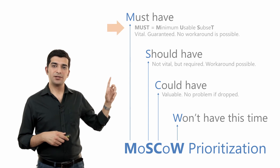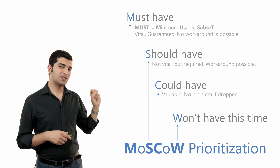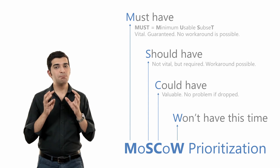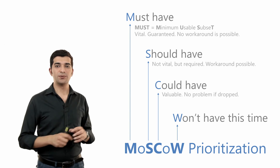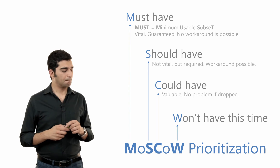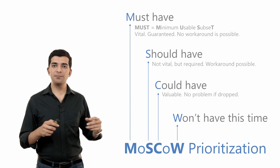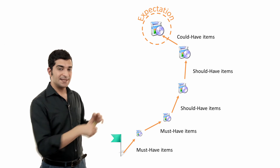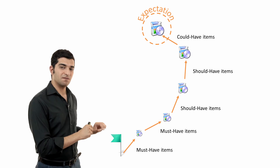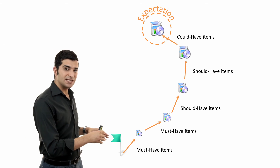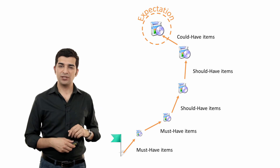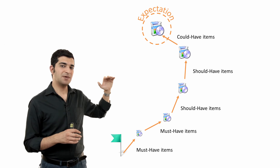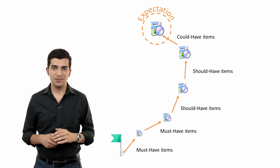We have the acronym MUST in DSDM, which stands for Minimum Usable Subset — that's the set of all must-have items. It's the minimum you can have when you want to start using your product, and it's an important concept. Whenever we have a requirement, we assign one of the M, S, or C labels to it. In an adaptive system, we start with the most important things — the must-haves — then go on with should-haves and then could-haves. When we don't have enough time to complete everything, the things we drop will be the least important items.